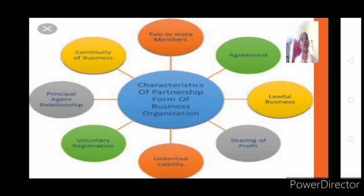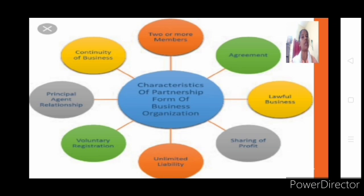The first feature is: two or more members. For sole proprietorship the number of members is one — a single owner. But for partnership, the minimum is two. When you want to start a partnership business you need at least two members: yourself and one more person who has mutual understanding, the same ideologies, is interested in sharing profit and loss, and is willing to contribute capital.